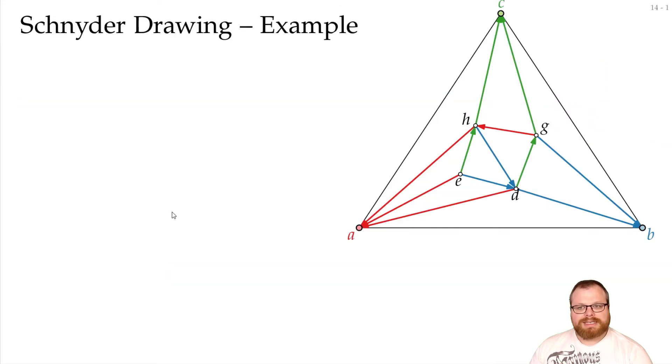Let's have a look at an example. We have this graph here. We have 1, 2, 3, 4, 5, 6, 7 vertices, and we have 2n-5 is 9 faces. So we put our vertex a at barycentric coordinate 9, 0, 0, b at 0, 9, 0, and c at 0, 0, 9.